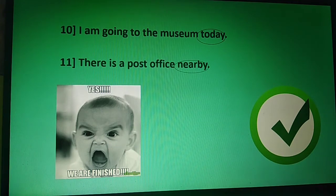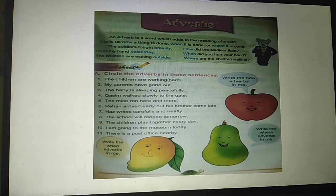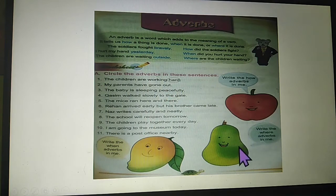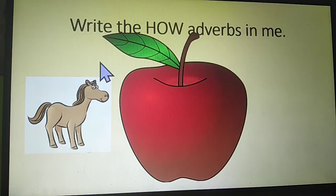I hope all of you understood this exercise. Please circle the correct adverb in your book. Students, in page number 45 you can see three fruits — apple, pear and mango. This is another task for you. Write the how adverbs in me. Students, now we are going to find out how adverbs — the adverbs of manner.